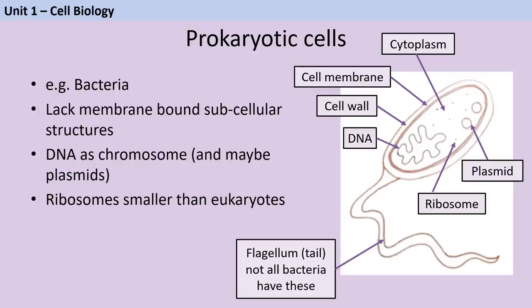Prokaryotic cells, such as bacteria, are much smaller than eukaryotic cells. A typical bacterium might be about 2 micrometres across, whereas a skin cell would be more like 20 or 30 micrometres — around 10 times bigger. Prokaryotic cells don't have a nucleus; instead, their DNA exists as a single circular chromosome. Some bacteria may also have small circles of DNA called plasmids, which often contain genes for things like antibiotic resistance or metabolism of a novel food source — extra genes that are useful but not life and death.